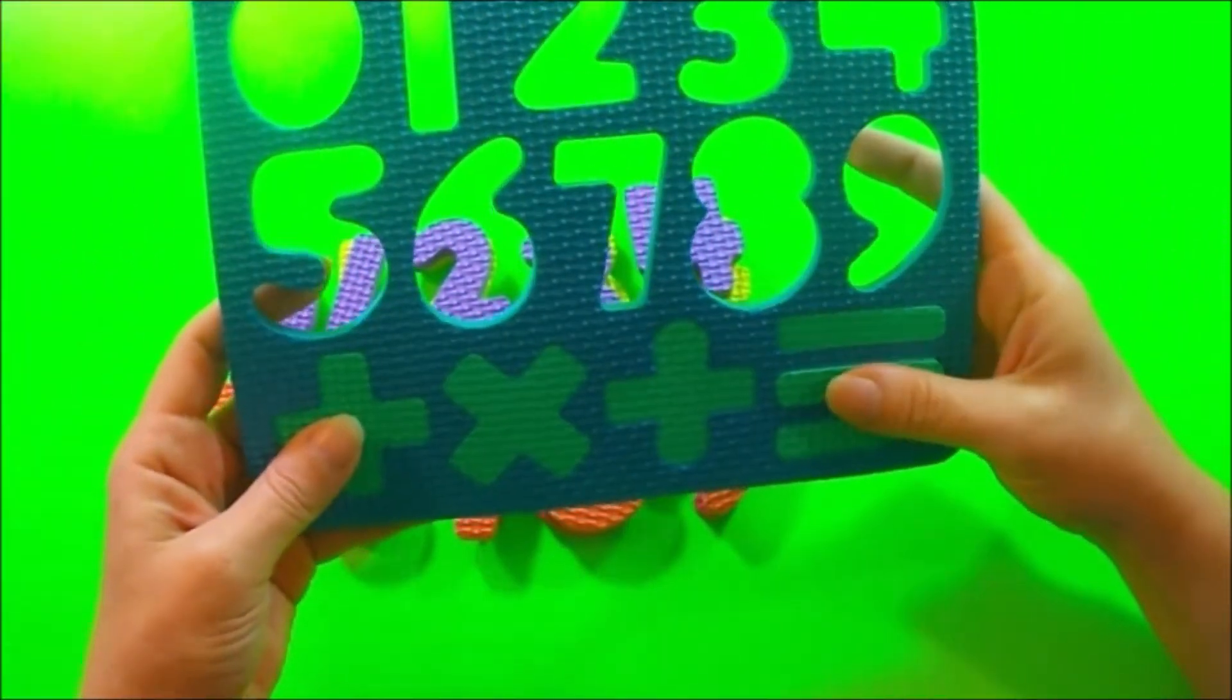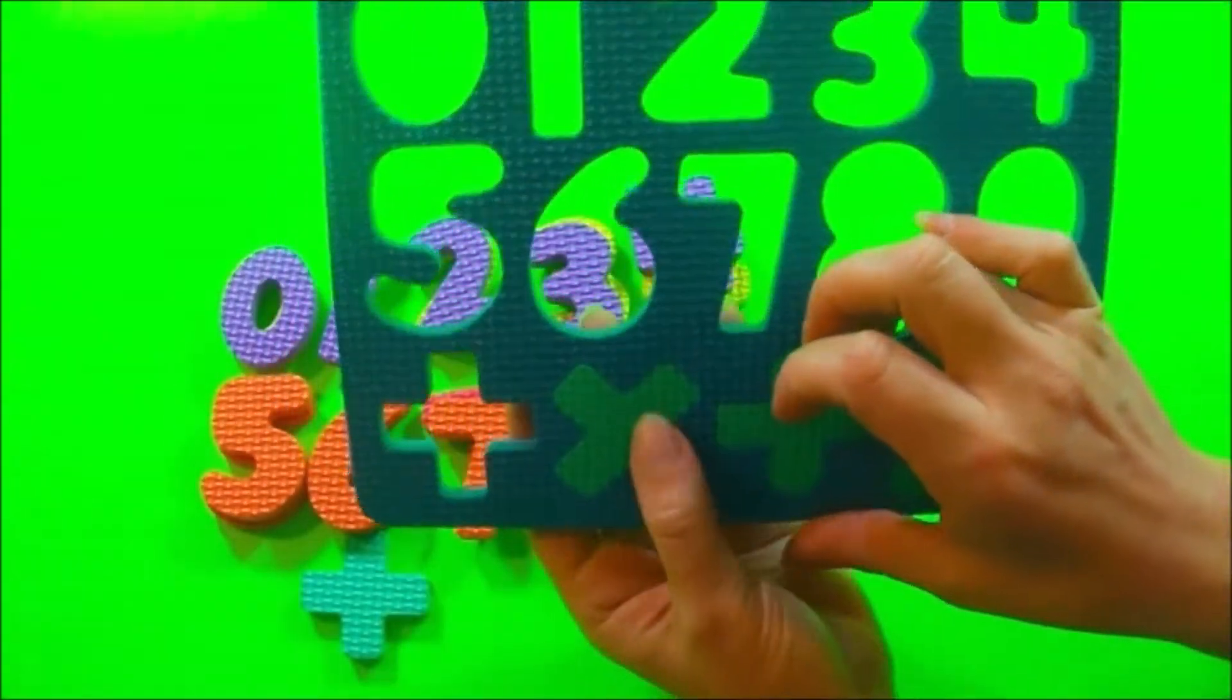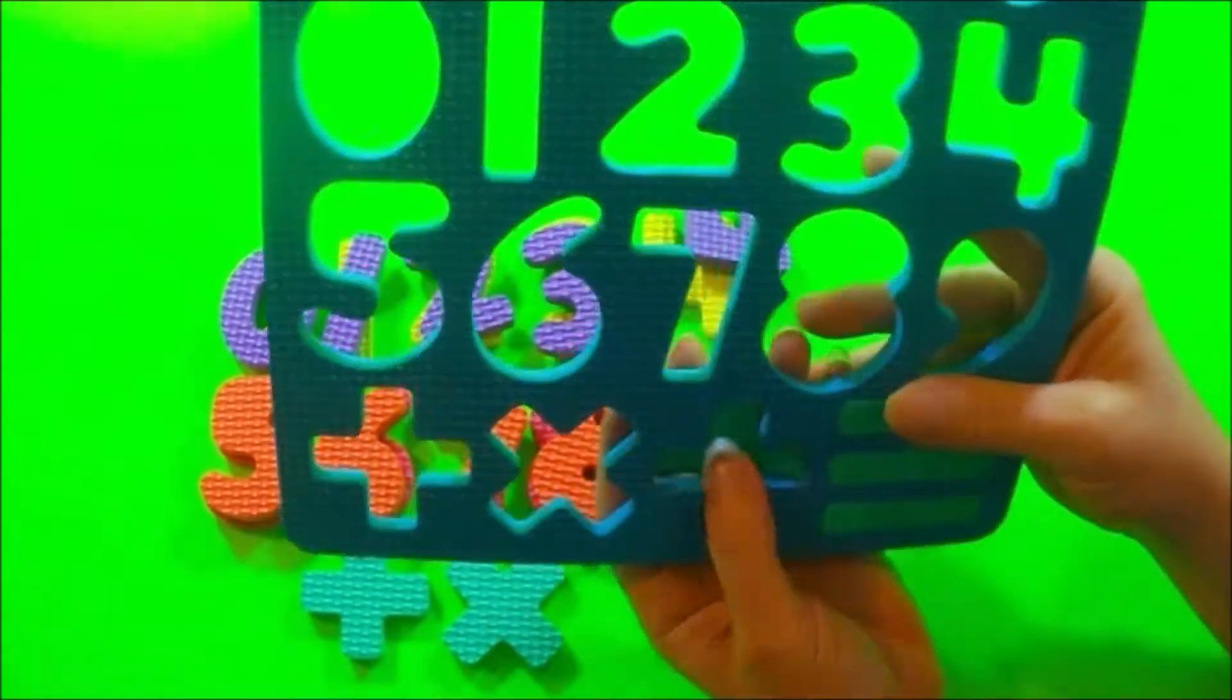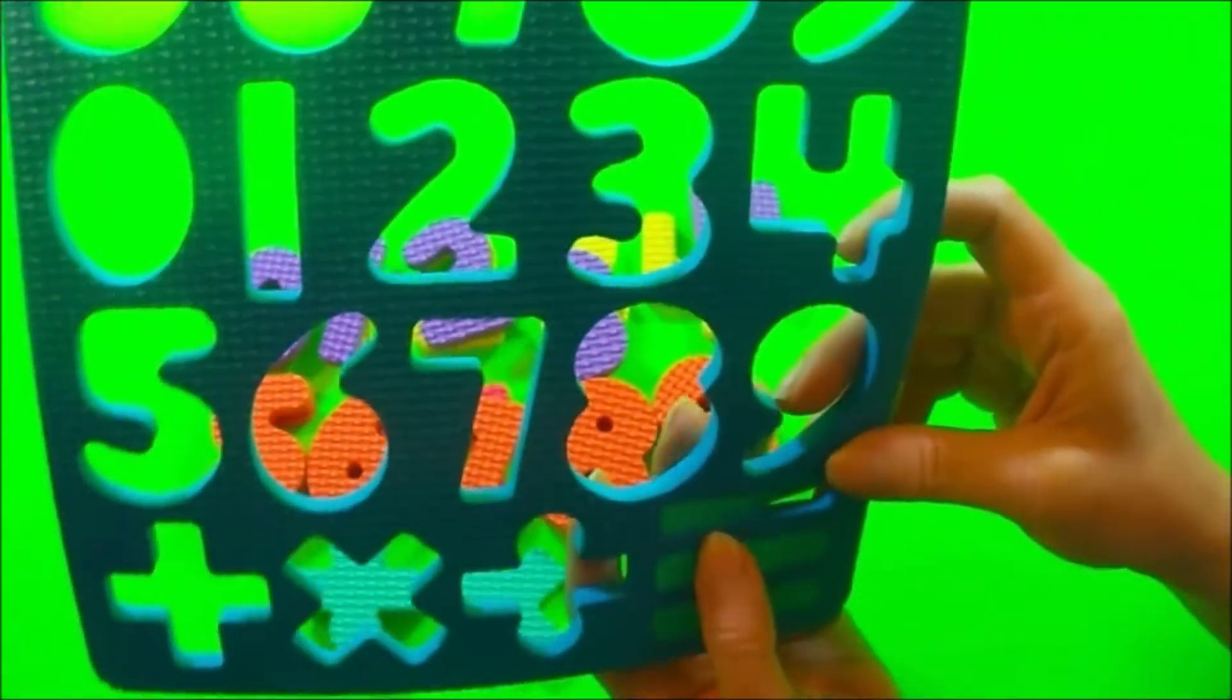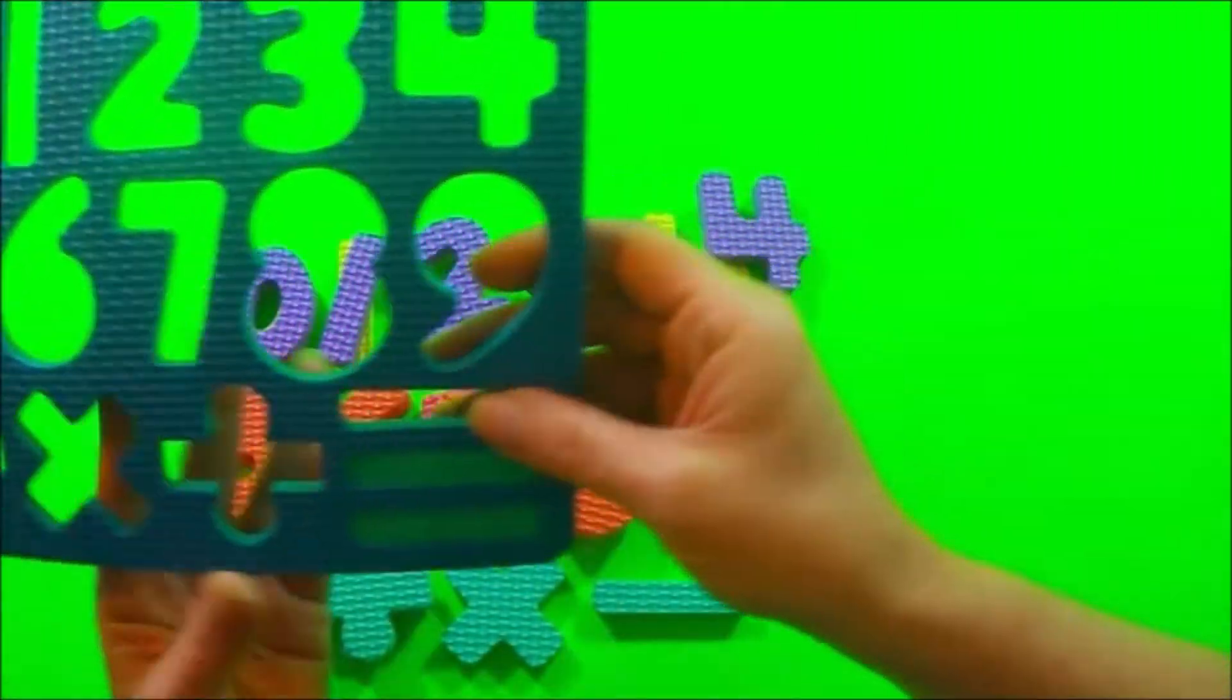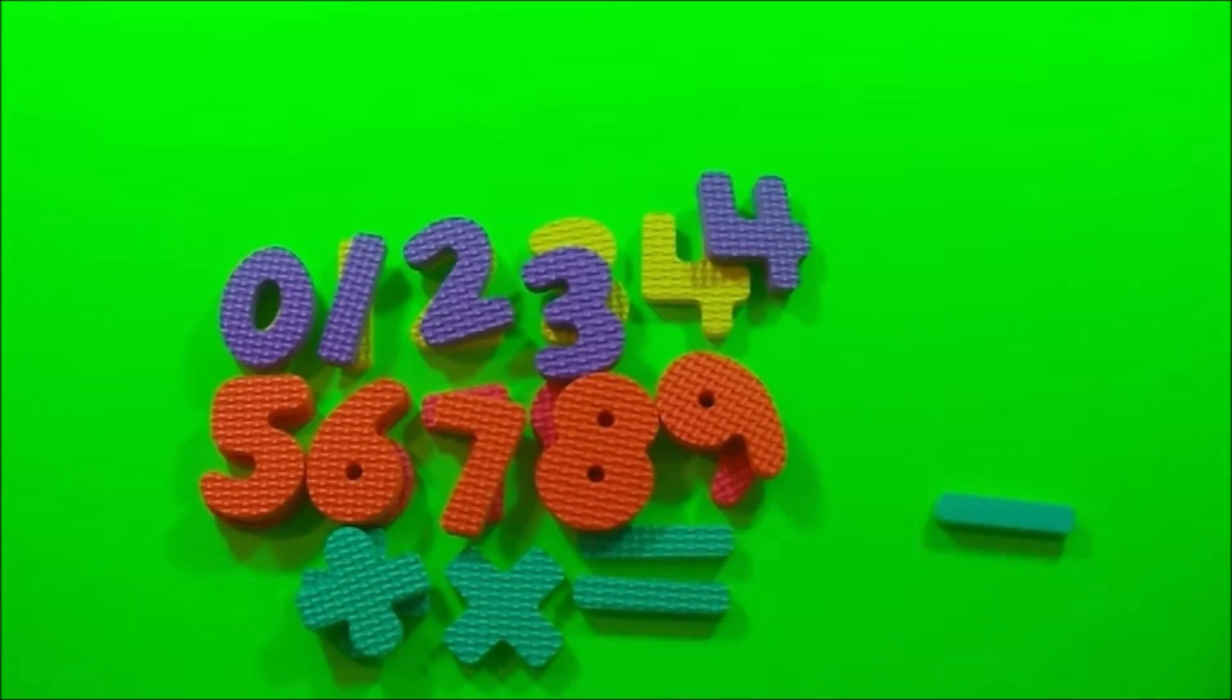And I have math symbols. Plus, plus, times. An x is times. Another plus. A minus. Minus is just a straight line. Minus. And close. Two minus five makes an equal. Yeah.